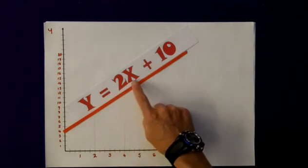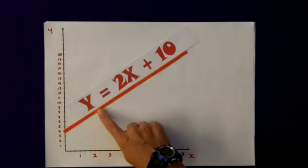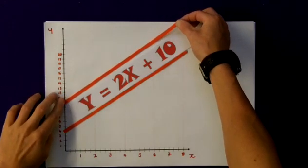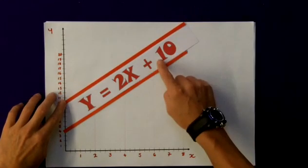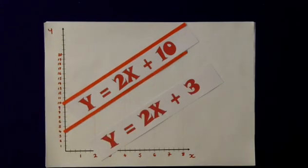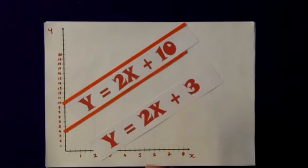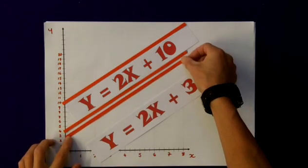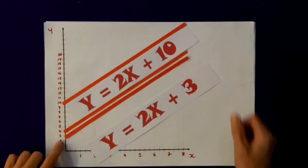The equation y equals 2x plus 10 will be parallel to this equation, the original one, but the intercept point will be at plus 10, which is here. Likewise with y equals 2x plus 3, it will be parallel to the original equation, but the intercept point will be at plus 3.